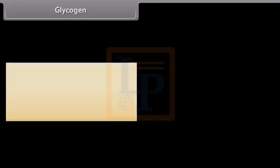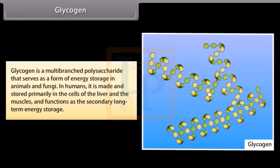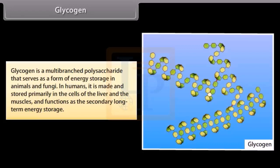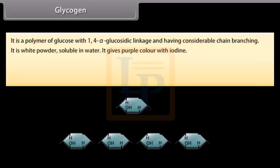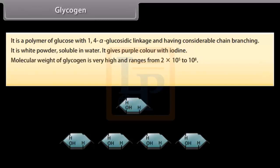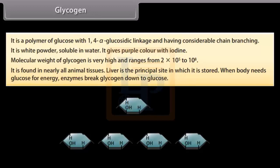Glycogen is a multi-branched polysaccharide that serves as a form of energy storage in animals and fungi. In humans, it is made and stored primarily in the cells of the liver and muscles and functions as the secondary long-term energy storage. It is a polymer of glucose with 1,4-alpha-glucosidic linkage and considerable chain branching. It is a white powder, soluble in water, and gives a purple color with iodine. Its molecular weight is very high, ranging from 2×10⁵ to 10⁸. It is found in nearly all animal tissues, with the liver being the principal site of storage. When the body needs glucose for energy, enzymes break glycogen down to glucose.